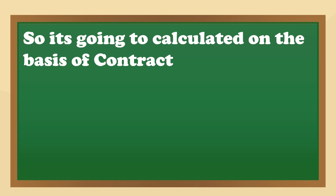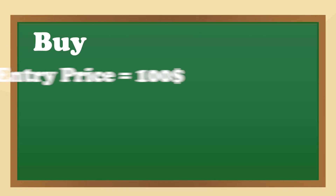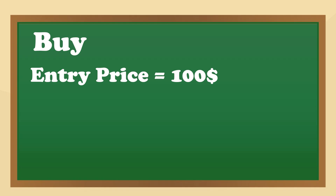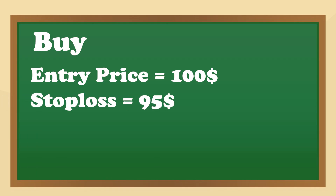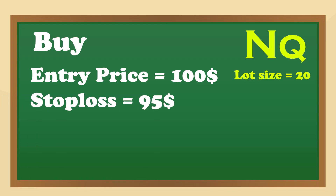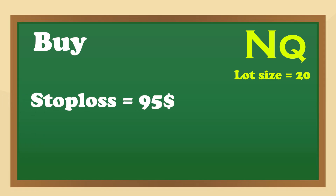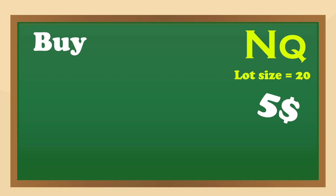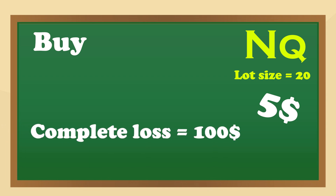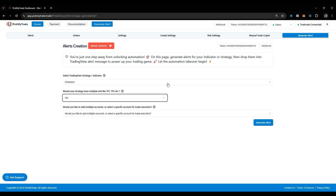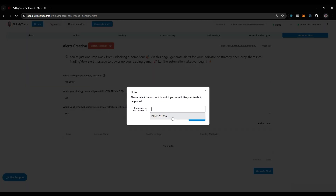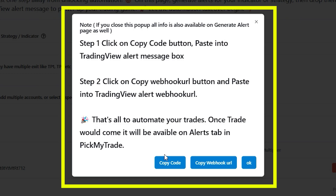The fifth type is Total Loss, calculated based on the contract. For example, if you enter a buy trade at 100 with a stop loss at 95, and you are trading NQ with a lot size of 20, the stop loss is set at 95. A five dollar loss on NQ results in a complete loss of 100. Once you complete all selections, click on Generate Alert.